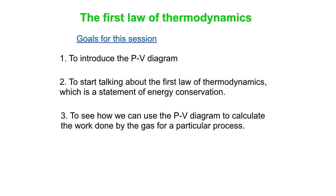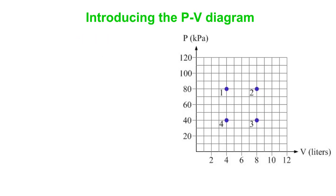And then we'll see how we can use the PV diagram to calculate the work done by the gas for a particular process. Okay, so let's start by introducing the PV diagram. What we have here is P for pressure, V for volume. So the pressure goes on the vertical axis, the volume goes on the horizontal axis.